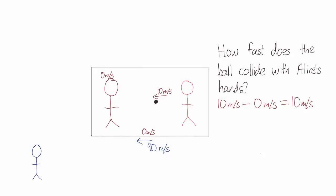Carl chucked the ball relative to himself at 10 meters per second, but Bob sees Carl already moving at 90 meters per second. So in Bob's reference frame, the ball is moving at 100 meters per second.